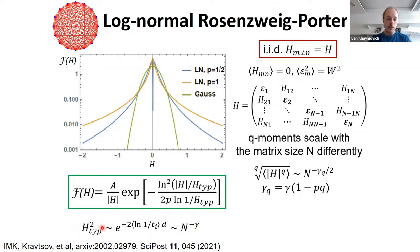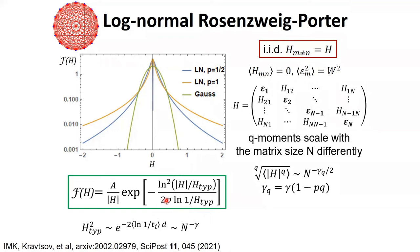This gives us two parameters: gamma, related to the size of the typical matrix element — increasing gamma decreases off-diagonal elements and effectively increases disorder — and p, which parametrizes the width (fatness) of the tail of the log-normal distribution. As p increases, the tails become fatter, giving more rare but large matrix elements.